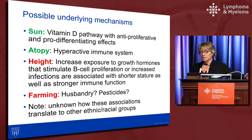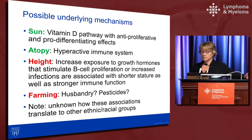Sun and farming are the only two risk factors that are actually modifiable. However, none of the identified factors currently lead to actionable lifestyle changes. It's also important to note that essentially all of these studies have been done in Caucasian populations, so how findings translate to other ethnic and racial groups remains unknown.